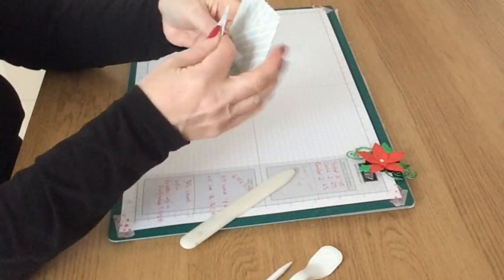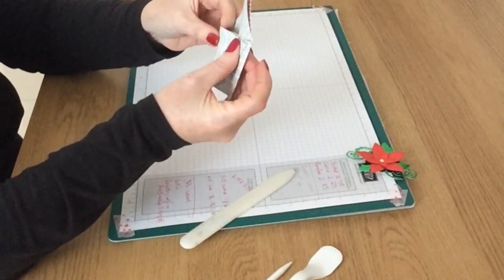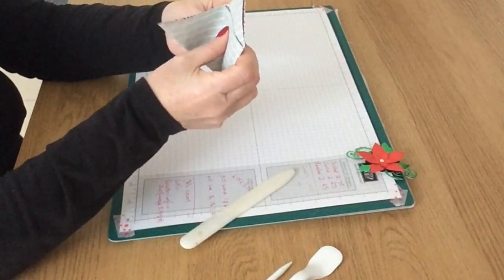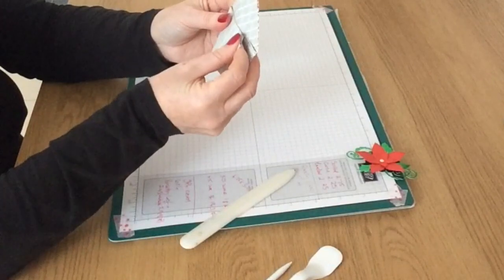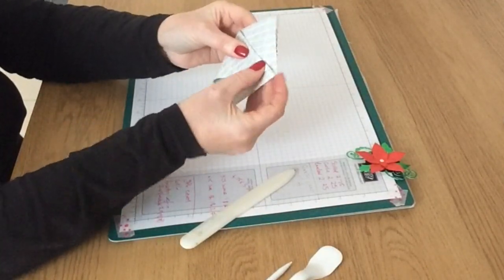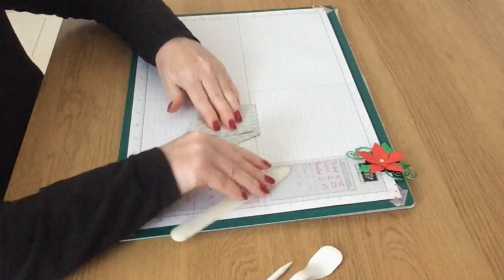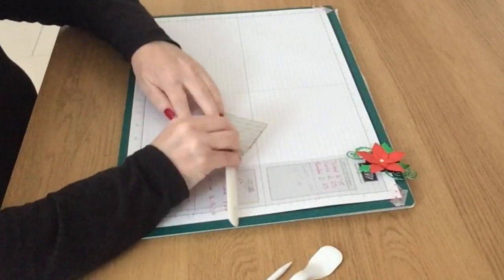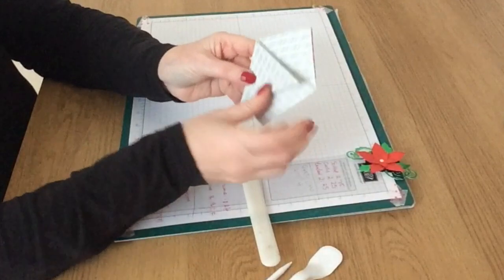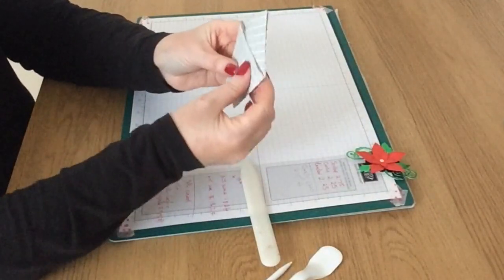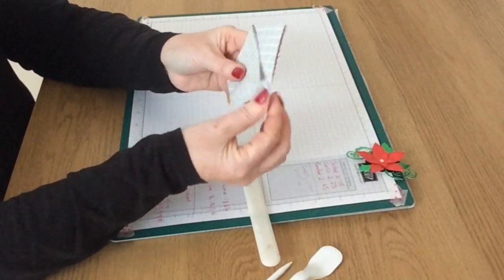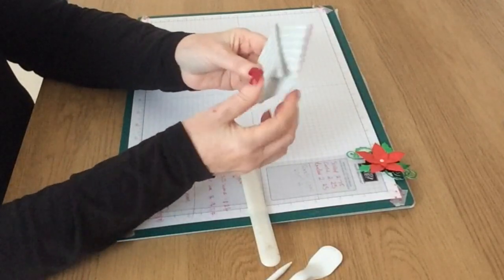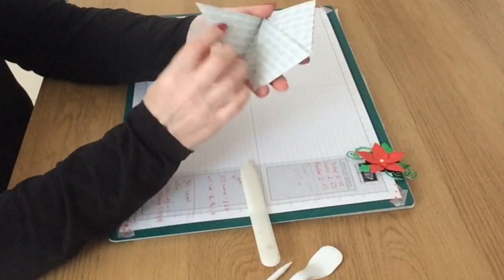Then you're going to bring this side over to line up. And because this is quite thick, especially when it's doubled up, you just really need to crease it with your bone folder. So you've got something that looks like this.